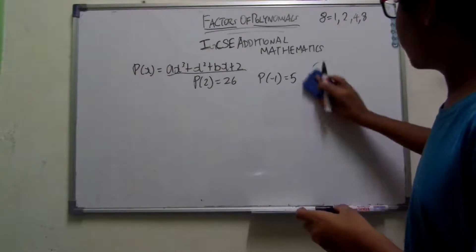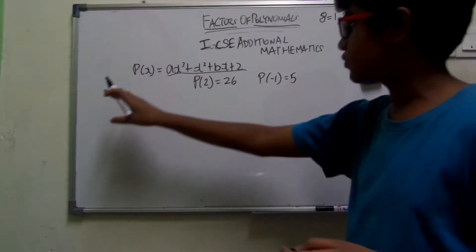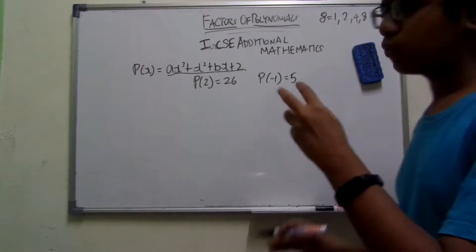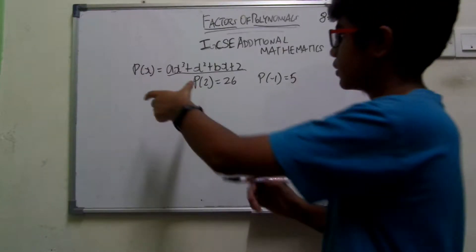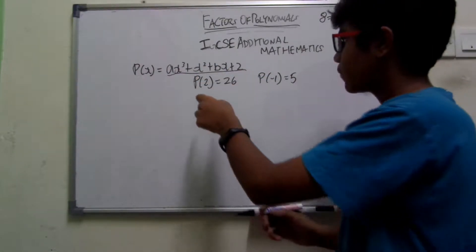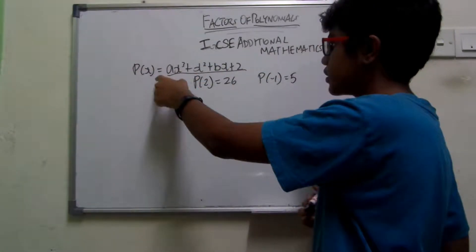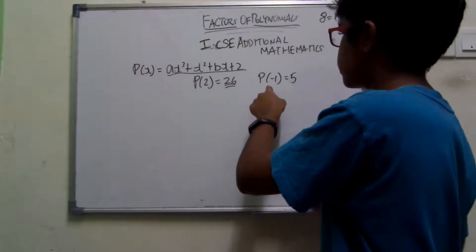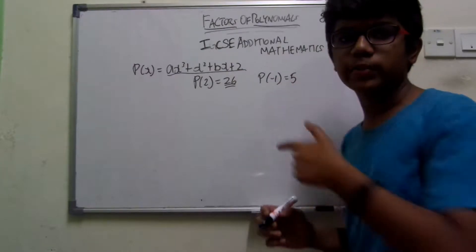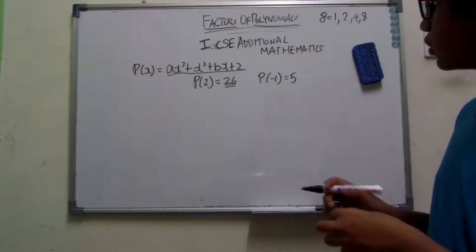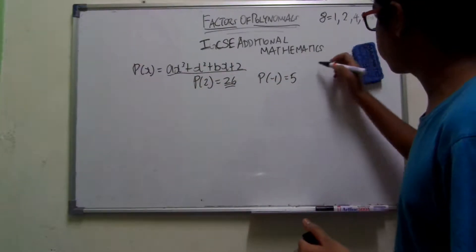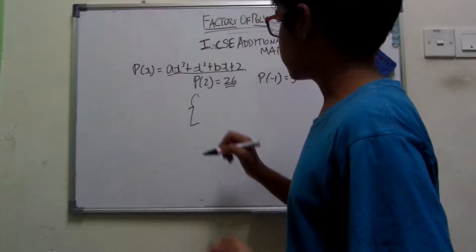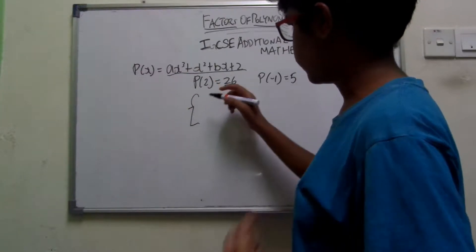You could have a question saying that p(x) is a polynomial equation. It has a remainder of 26 when 2 is substituted, and a remainder of 5 when negative 1 is substituted. It can even say it has a factor of 3, which means that when 3 is substituted inside this, we will be getting the answer 0. We are given the task of finding the values of a and b, so we have to form a simultaneous equation and substitute the x values.